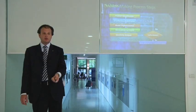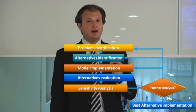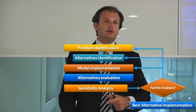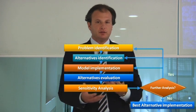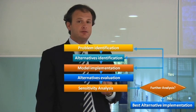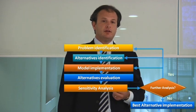So what are the decision-making process steps in modern decision making? The steps I'm showing you here are the general steps followed, and the community agrees that managers nowadays follow these steps. The first step is problem identification. The second step is alternative identification.